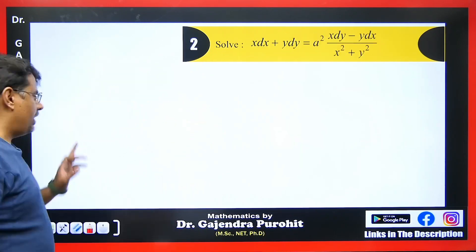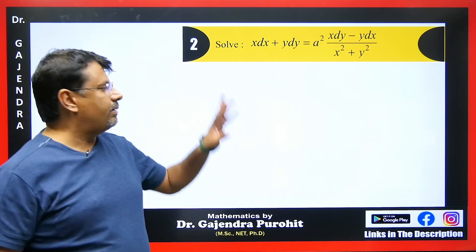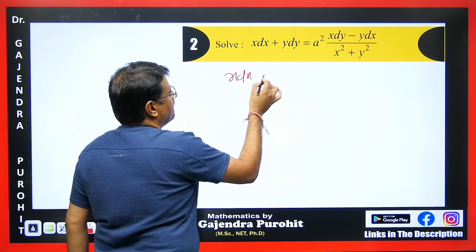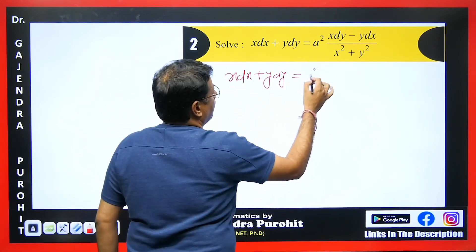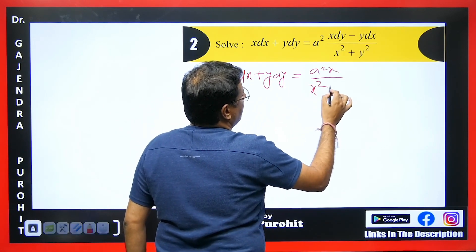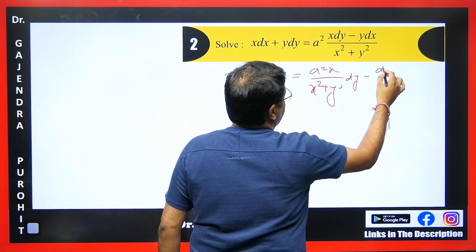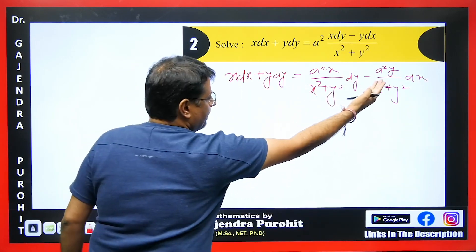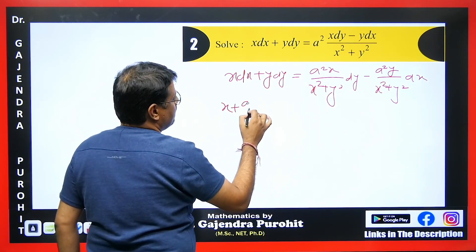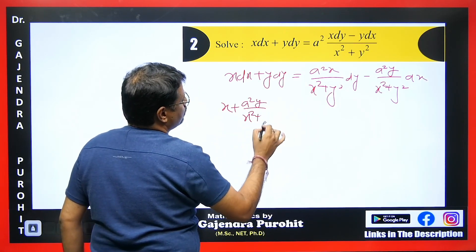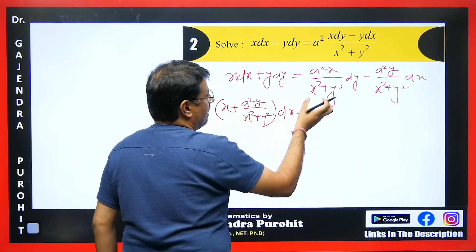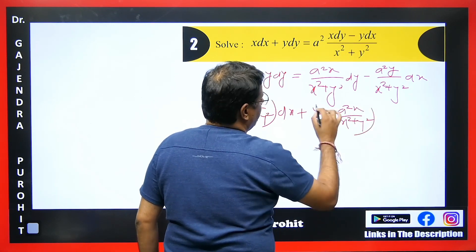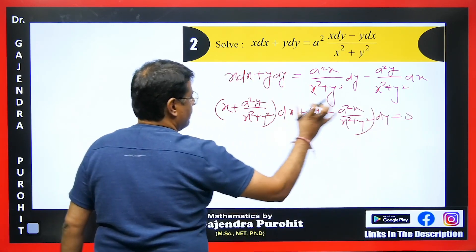Now the next question might seem odd but it is also easy. Combine the dx and dy terms. The M term becomes x + a²y/(x² + y²) and the N term becomes y − a²x/(x² + y²).